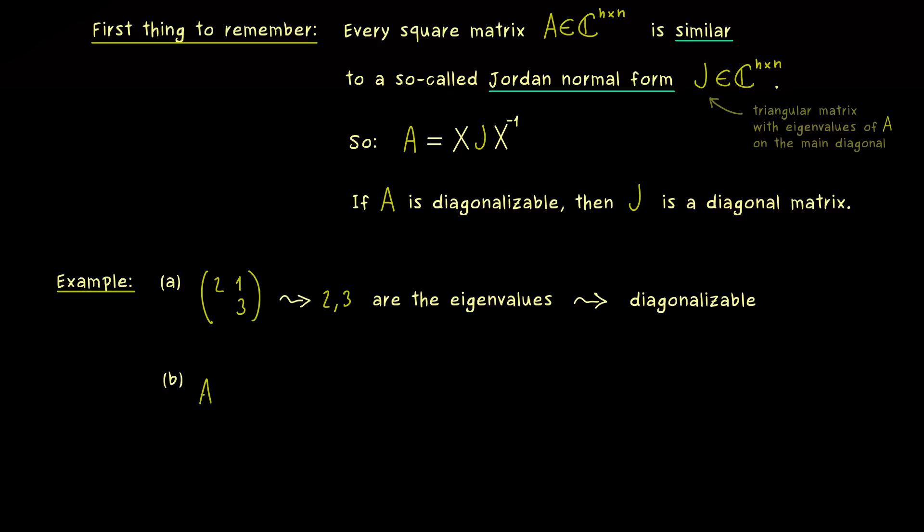So we don't have any problems here, this matrix here can be transformed to a diagonal matrix without a problem. However, the picture completely changes if A only has one eigenvalue. So let's consider 2, 1, 0, 2 as a matrix.